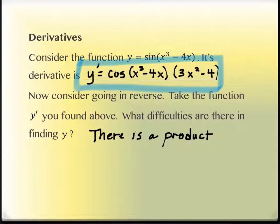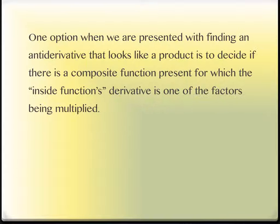With few exceptions, and there are a couple, almost everything in this section is going to look like products. Let's actually see how it works going forward now. One option we're presented with when finding an antiderivative that looks like a product is to decide if there is a composite function present.